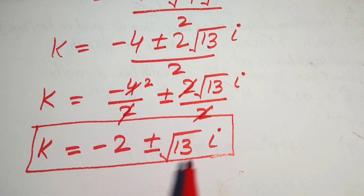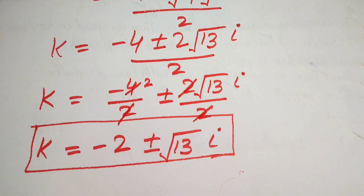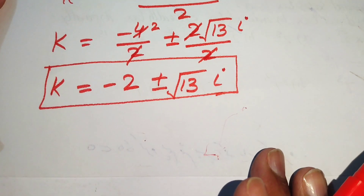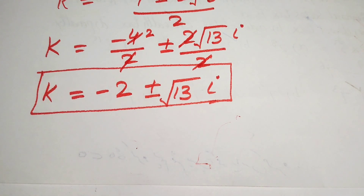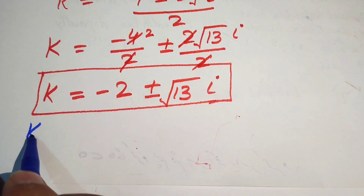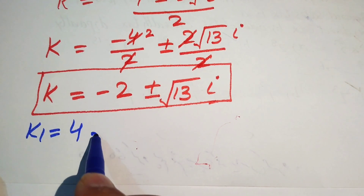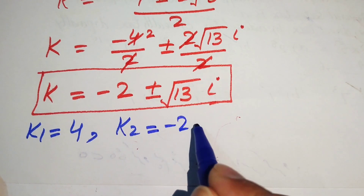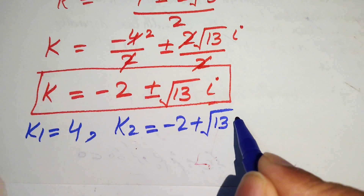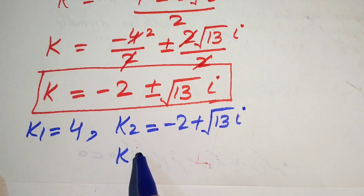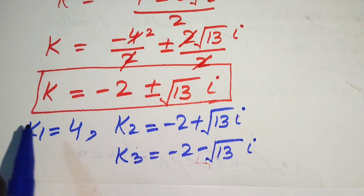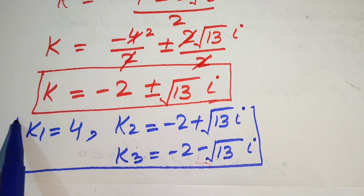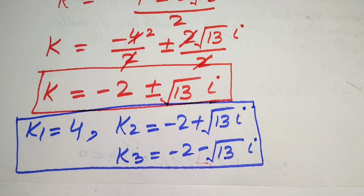These are the two complex roots of the cubic equation. So the three final roots are: k₁ equals 4 (the real root), k₂ equals minus 2 plus √13·i, and k₃ equals minus 2 minus √13·i. Thank you for watching — please subscribe to the channel for more.